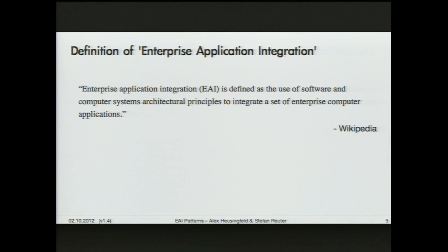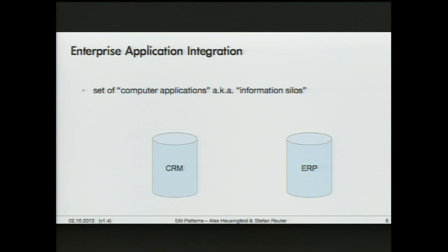Most people read the Wikipedia entry on the definition of enterprise application integration, which basically says it's a way to connect a set of enterprise computer applications. The set of computer applications is very often also called information silos — big ERP systems like SAP, or customer relationship management systems like Siebel, for example.